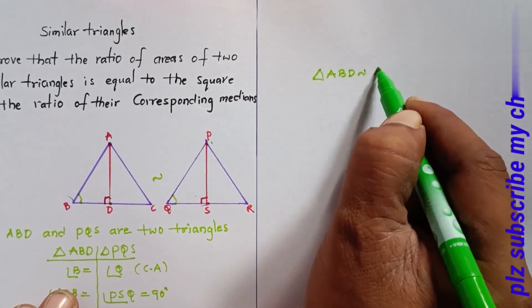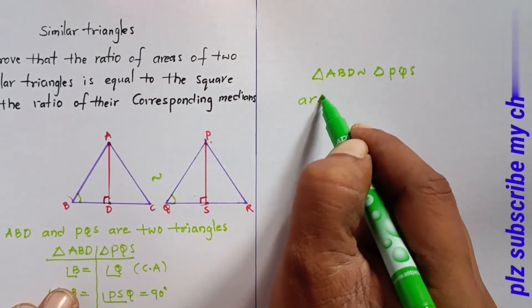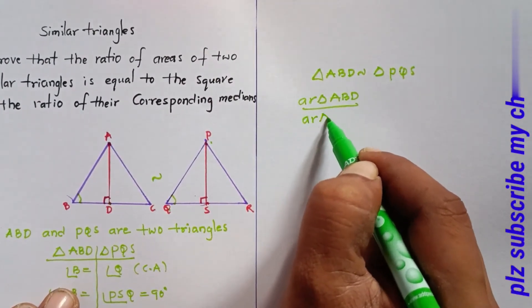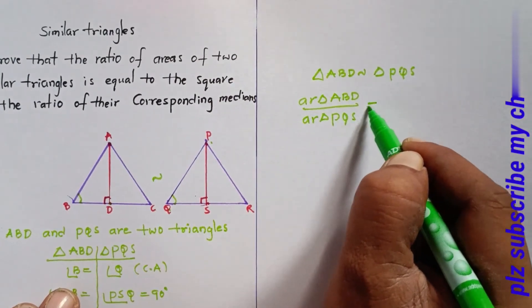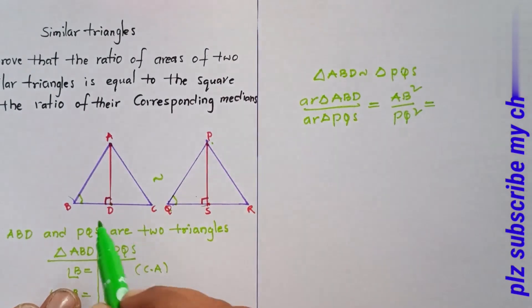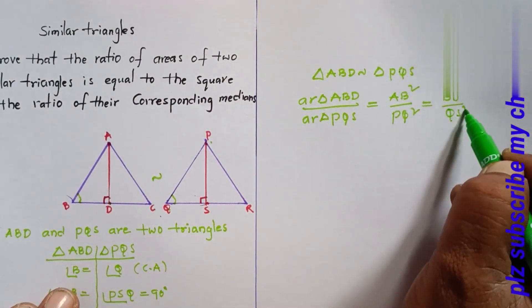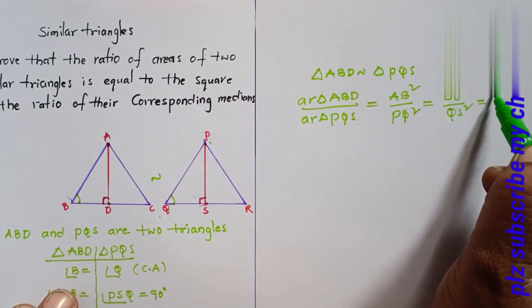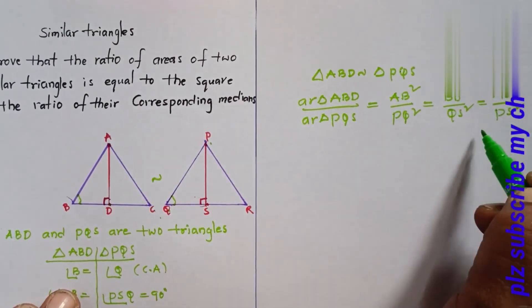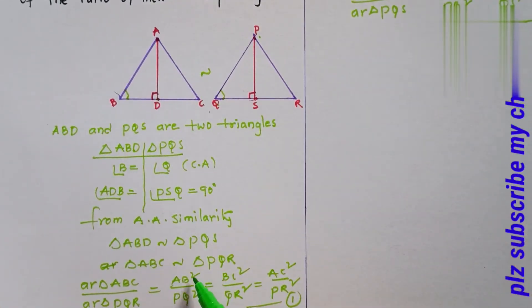Since triangle ABD is similar to triangle PQS, corresponding sides are in the same ratio. The area of triangle ABD by area of triangle PQS equals AB² / PQ² equals BD² / QS² equals AD² / PS². This is equation 2.